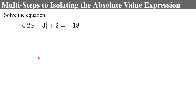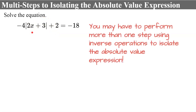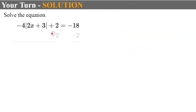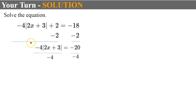Now we're going to look at more complex absolute value equations. These contain absolute value signs within the equation, but this one requires multiple steps to isolate the absolute value expression — you may have to perform more than one inverse operation. First, subtract 2 from both sides, leaving negative 4 times the absolute value of 2x plus 3 equals negative 20. To undo the multiplication, divide both sides by negative 4; negative 4 divided by negative 4 is 1, leaving just the absolute value. Negative 20 divided by negative 4 is positive 5.